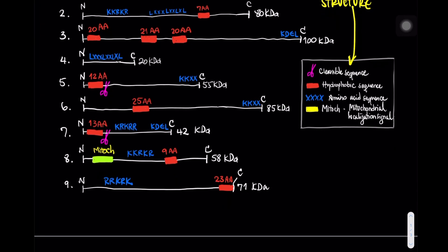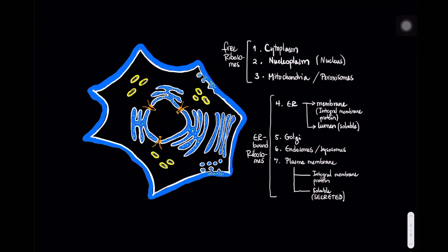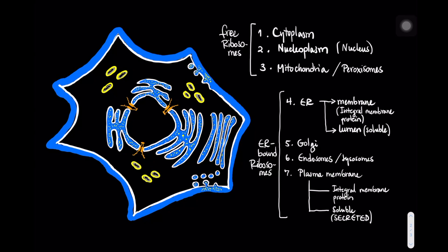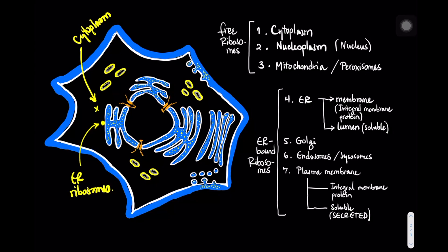Proteins can be localized in different compartments within the cell. Essential idea number one: all proteins are synthesized in the cytoplasm — that is where protein synthesis takes place. However, as proteins are being synthesized, some may end up being synthesized in ribosomes associated with the membranes of the endoplasmic reticulum. So one potential location is free ribosomes, and the other is ER-bound ribosomes.